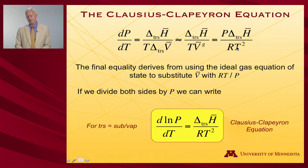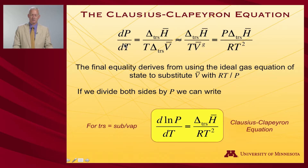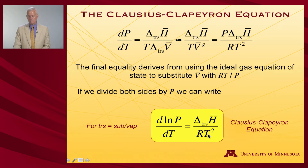And finally, divide both sides by P. When I divide dP by P, dP over P is d(log P). So I'll write that here: d(log P). d(log P)/dT is the transition enthalpy divided by RT². And that is the Clausius-Clapeyron equation.